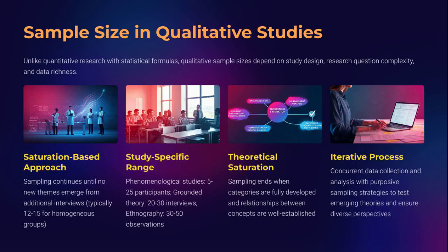Qualitative research laughs in the face of standard formulas. Here, sample size is not predefined by math, but by data saturation — the point at which new interviews or observations no longer yield novel insights. Different designs call for different norms: phenomenology may require 5 to 25 participants, grounded theory might need 20 to 30 interviews, and ethnography could involve 30 to 50 observations. It's iterative and flexible — you collect data, analyze in real time, and decide when to stop. Rigor in qualitative research depends not on quantity, but depth, diversity, and theoretical completeness.